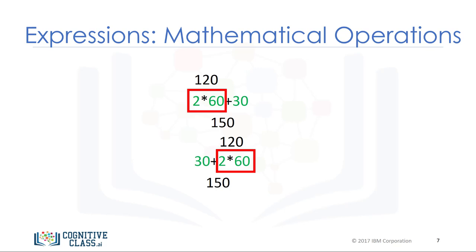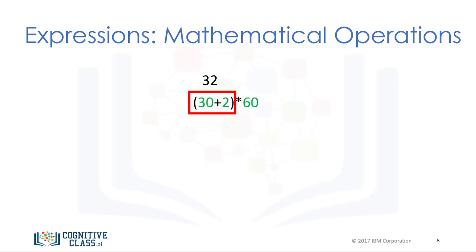There are a lot more operations you can do with Python. Check the labs for more examples. We will also be covering more complex operations throughout the course. The expressions in the parentheses are performed first. We then multiply the result by 60. The result is 1920.